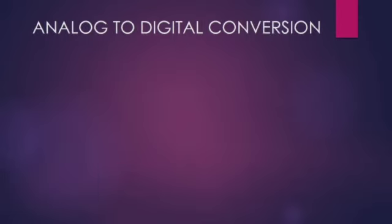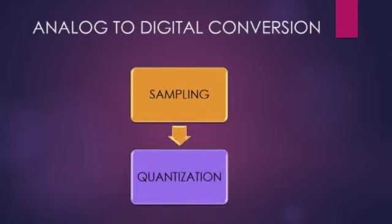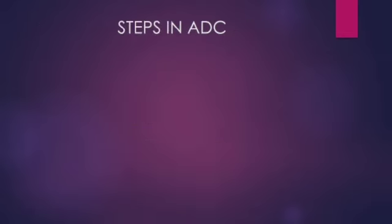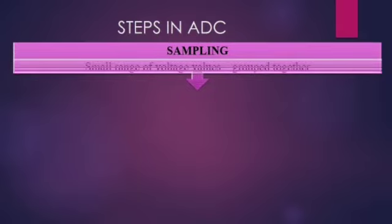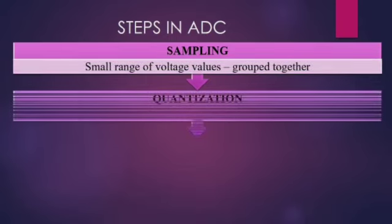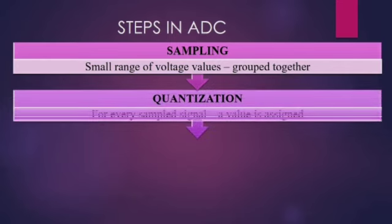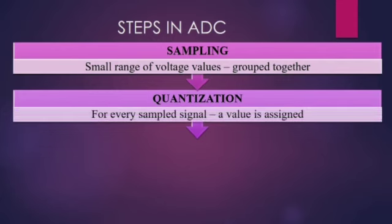The analog to digital conversion process is very simple. It just involves two main steps. First thing is sampling and the second thing is quantization. So from the name itself, sampling, right, you are going to collect the samples. Which means the small range of voltage values are getting grouped together. This is the first step. Second thing is quantization. So after it getting sampled, the signal is quantized. Which means every sampled signal is going to be assigned a numeric value.